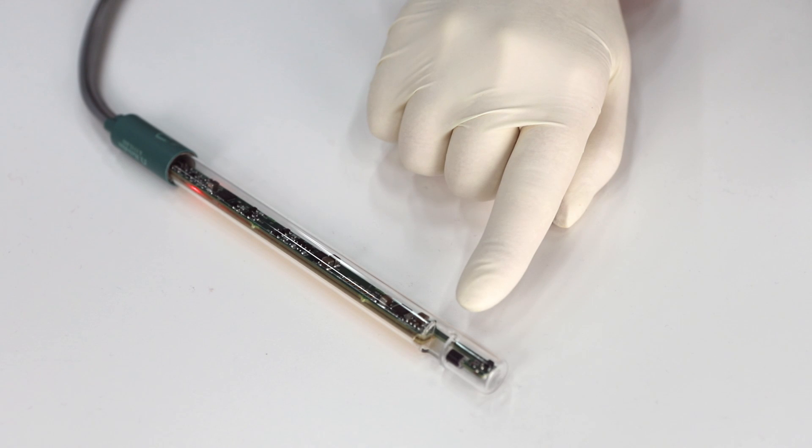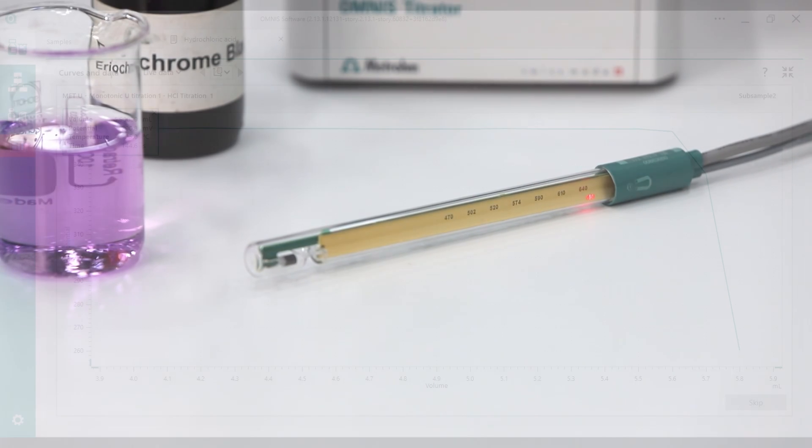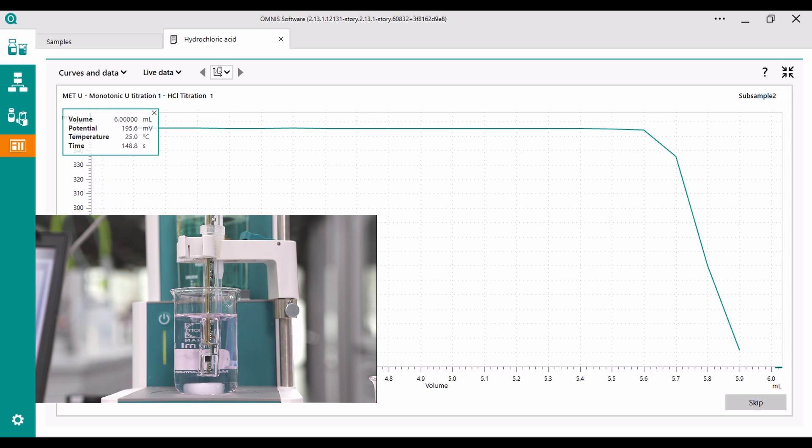The Optrode is a photometric sensor. Light of a specific wavelength passes through a measuring gap onto a photodiode. The photodiode measures the light transmission and converts it into a potential.